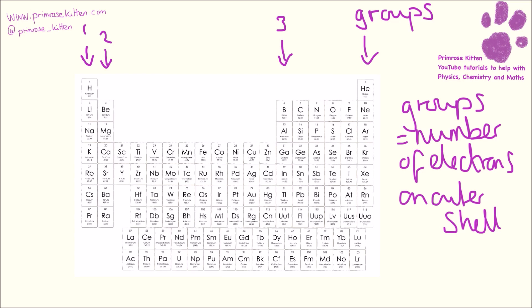Group three, everything has three electrons on the outer shell. Group four, everything has four electrons on the outer shell. Five, five electrons on the outer shell. Six, six electrons on the outer shell. Seven, seven electrons on the outer shell. And then right over at the end, we have the noble gases, which have eight or zero electrons on the outer shell, depending on how you're thinking about it. And then going across, we have periods.